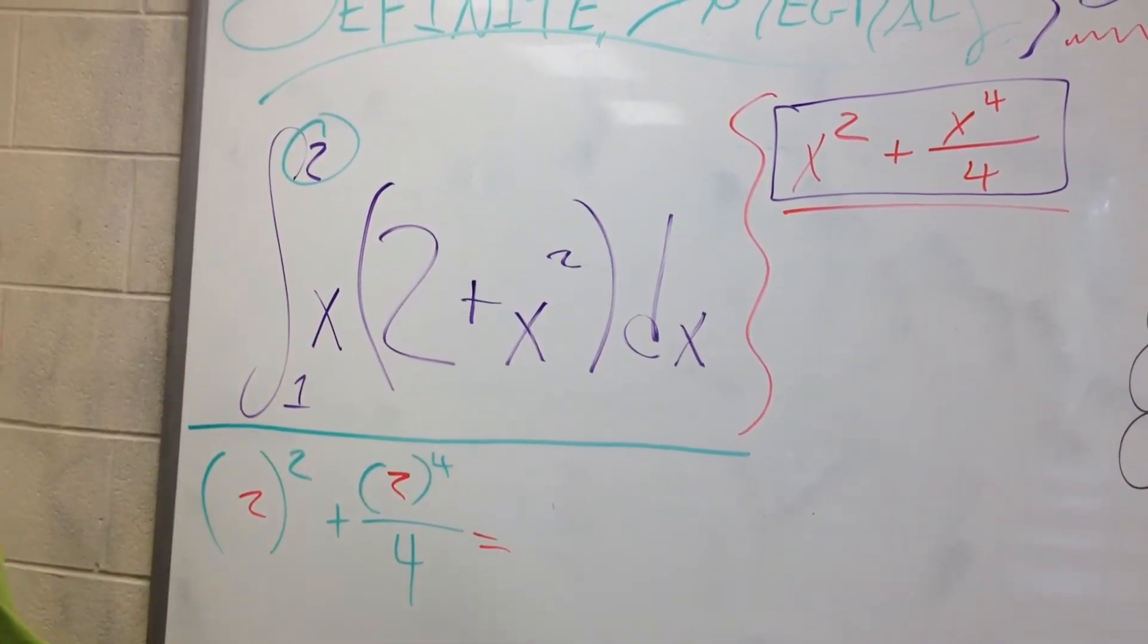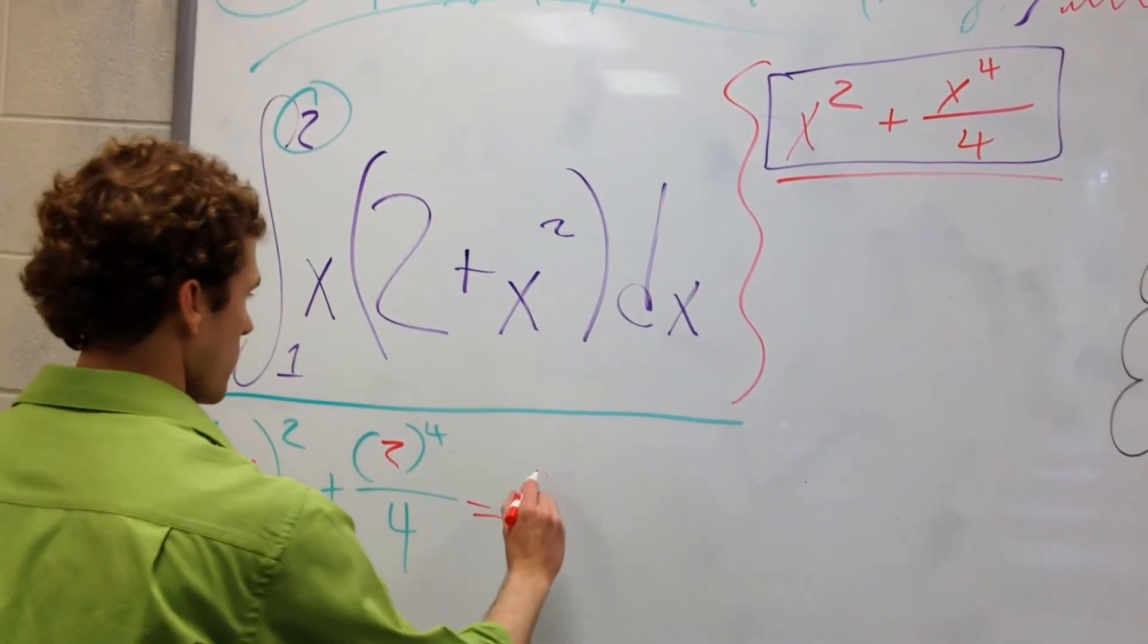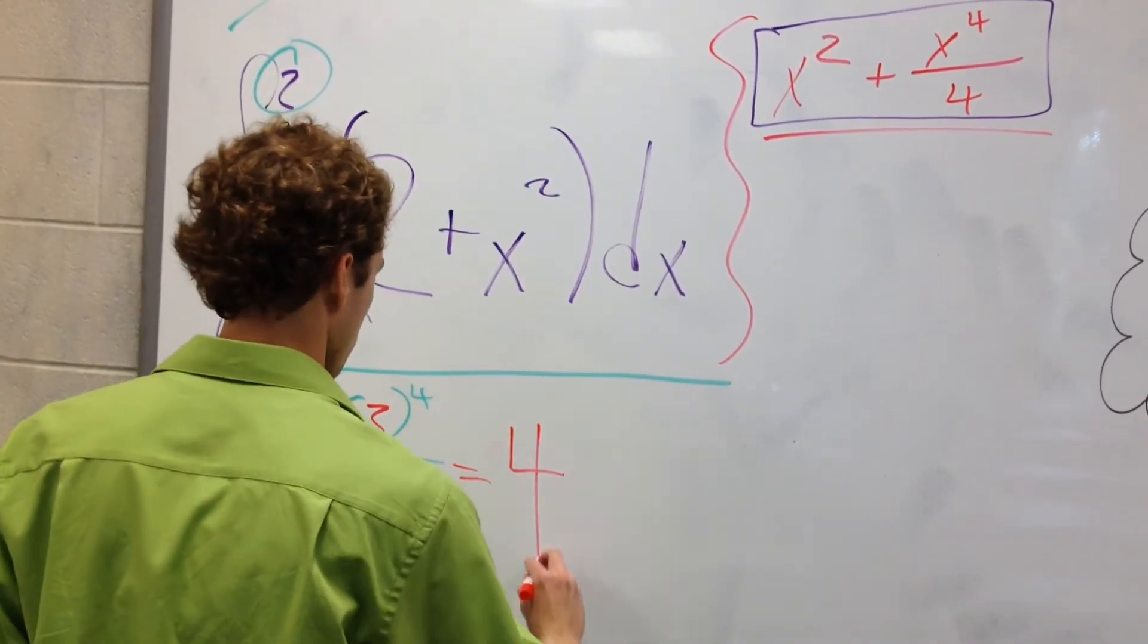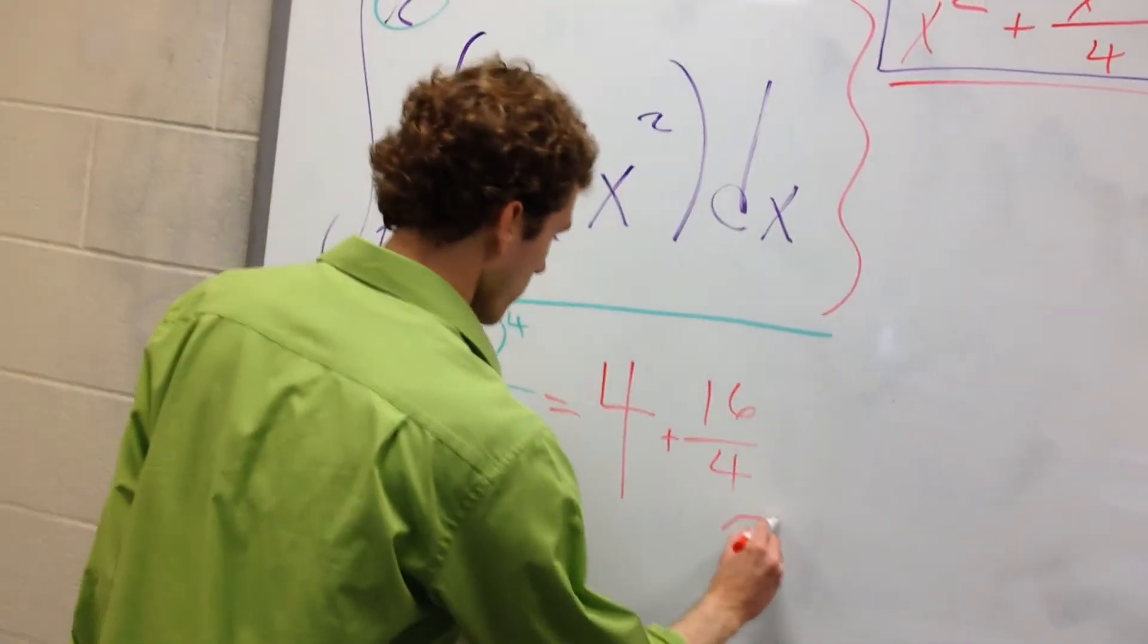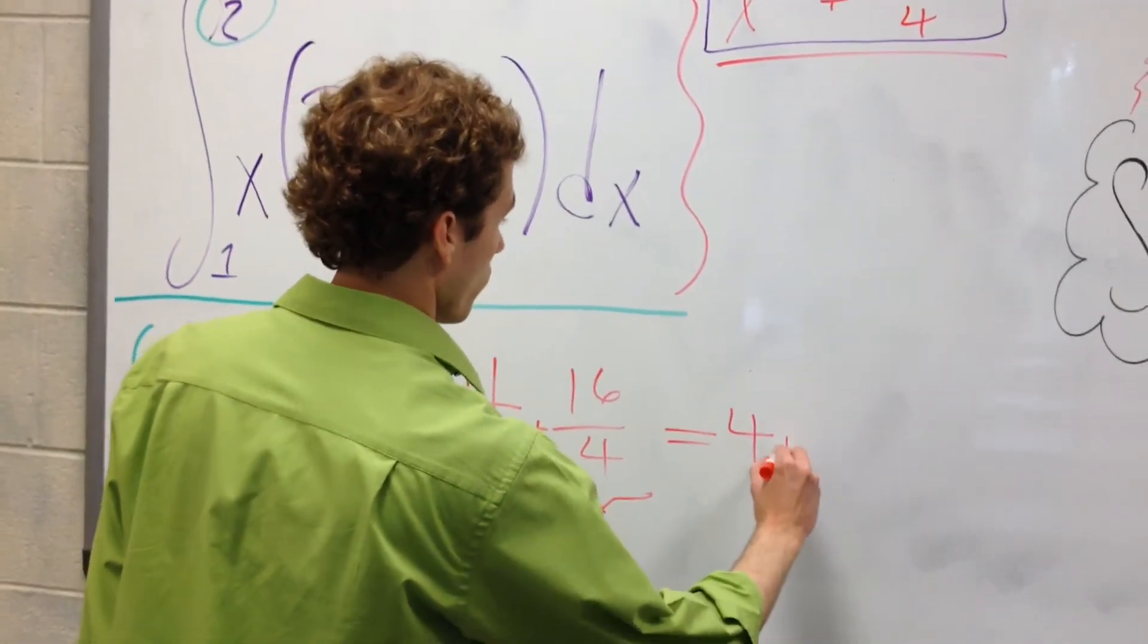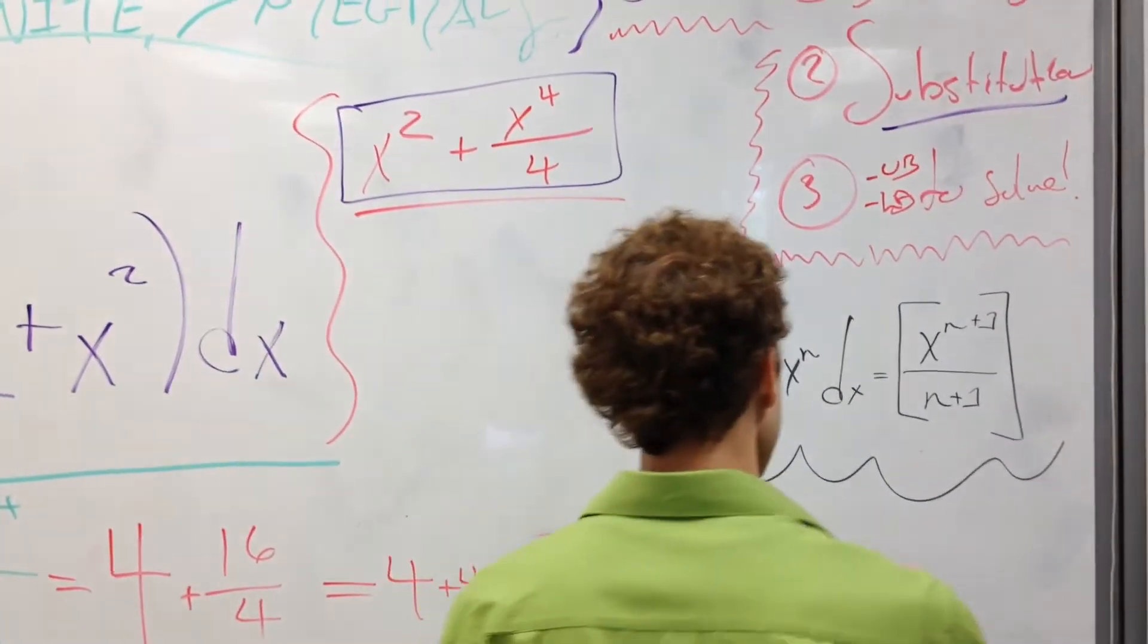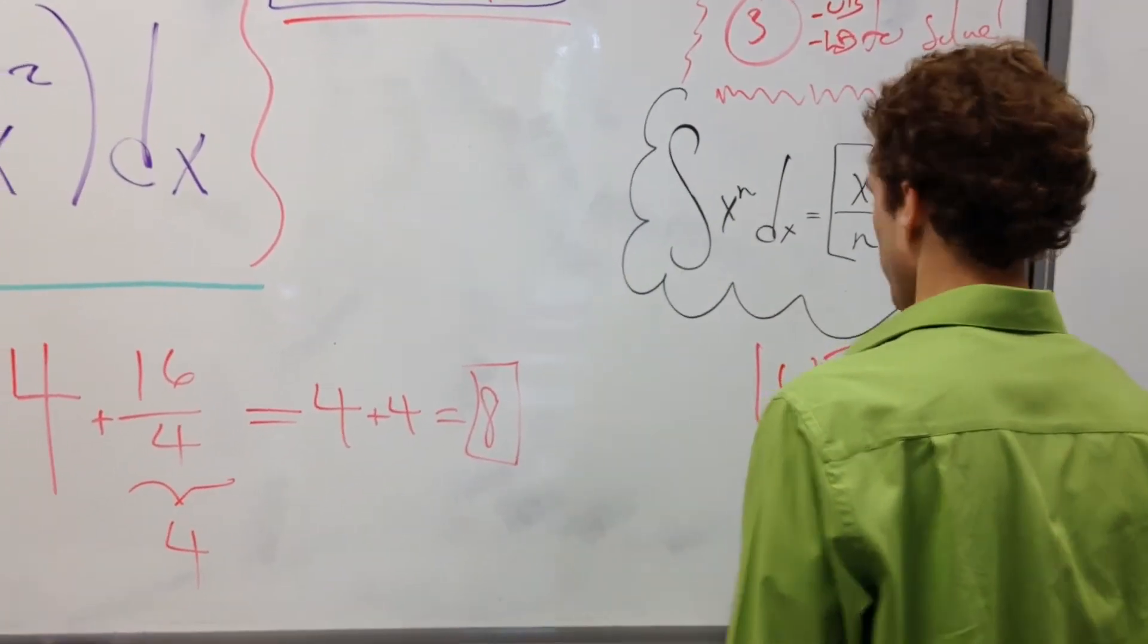So we'll go ahead and put our 2s in here. And what does this equal? Well, 2 squared, this is just 4, right? And 2 to the 4th is just 16, so we have 4 plus 16 over 4. Well, 16 over 4 is 16 divided by 4, so this is just equal to 4. So we have 4 plus 4, or 8. So our upper bound value here is going to be 8. So we've got that in our arsenal.